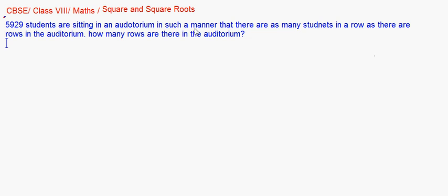As there are the same number of students and the same number of rows, we take 'a' to be the number of rows and the number of columns.